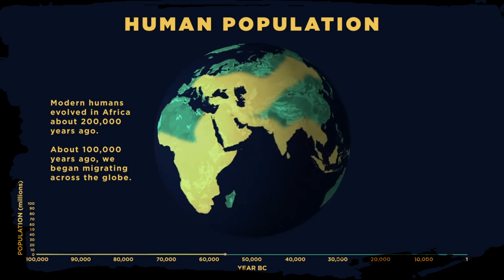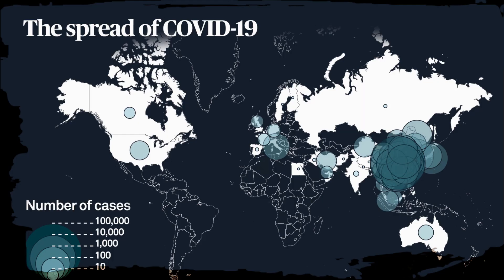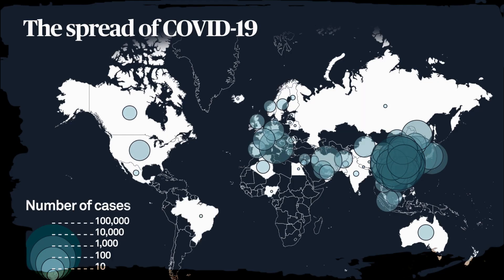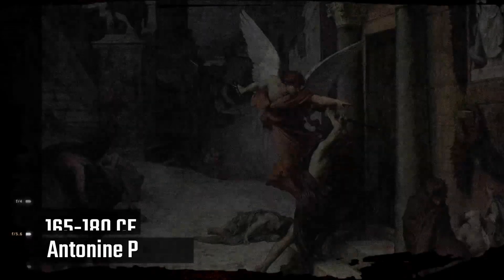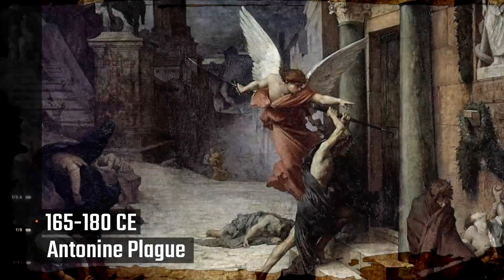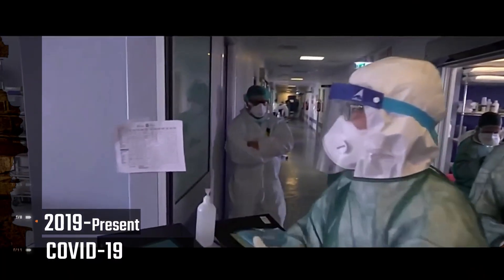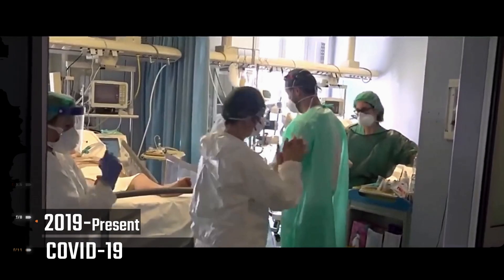Not every outbreak reaches pandemic level, as the novel coronavirus COVID-19 has. The World Health Organization on March 11th declared the COVID-19 outbreak a pandemic — the first such declaration in 11 years. Today, Factolic brings you a timeline of all the major pandemics that have occurred in human history, from the Antonine Plague to the current COVID-19 event. Let's get started.